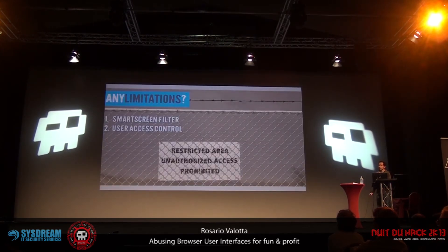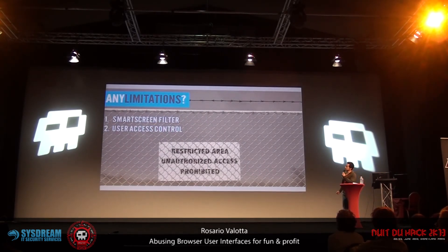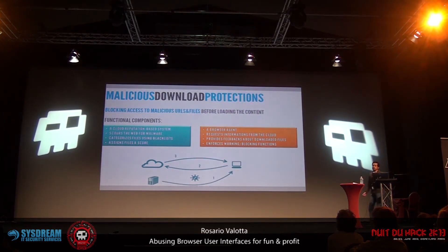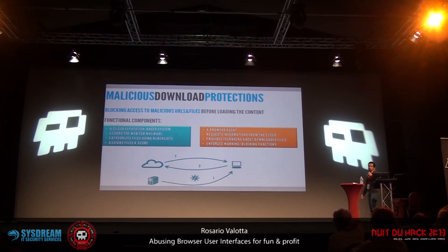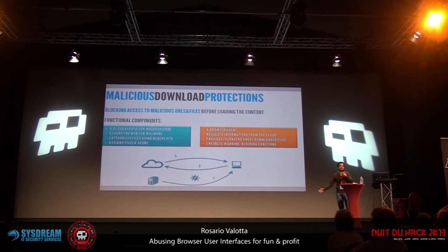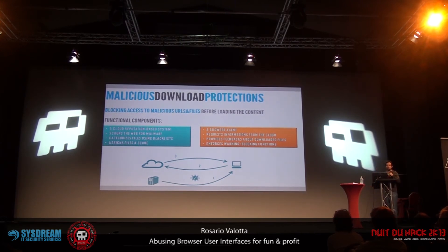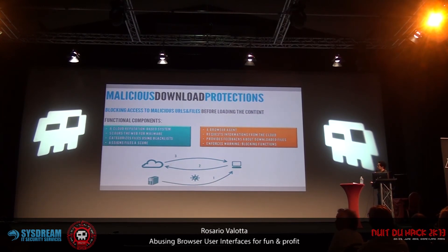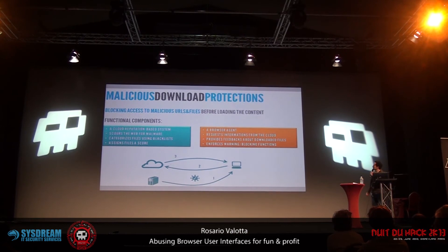There are two limitations for these attack techniques: Smart Screen Filter and User Access Control. Smart Screen Filter is part of browser protection technologies built to block access to malicious websites and applications. It is a client-server technology: on the server side, a cloud reputation-based system scores the web to find malicious samples and URLs. On the client side, a browser agent queries the cloud system before launching any downloaded file, then enforces warning and blocking functions based on the feedback.